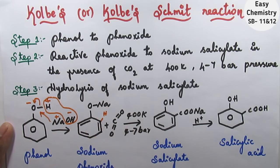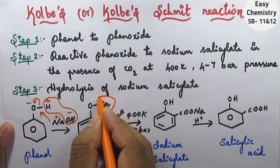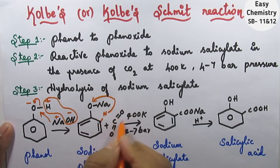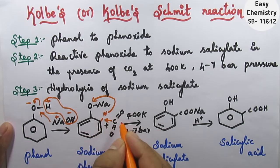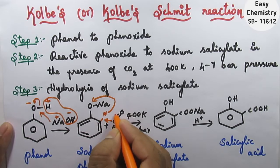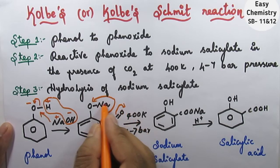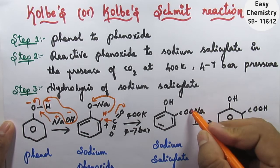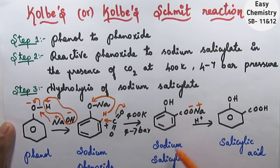In the mechanism, CO2 approaches the ortho position. The carbon of CO2 interacts with the ring, and the double bond connects to oxygen. The COO group picks up Na+, giving the sodium salt. This completes Step 2, giving sodium salicylate.